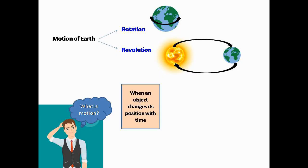Our Earth has two types of motion — one is rotation and the other one is revolution. Before learning these concepts, we should know what is motion. Motion is nothing but when an object or a body changes its position along with time. Here the object denotes Earth, and Earth's position in the solar system causes day and night and also forms seasons on Earth.